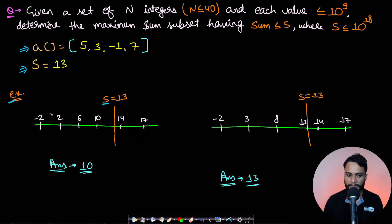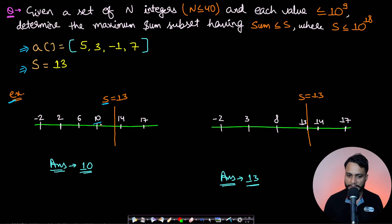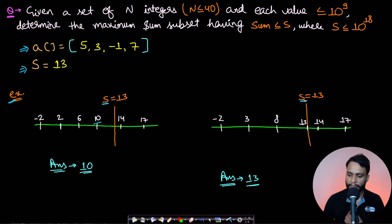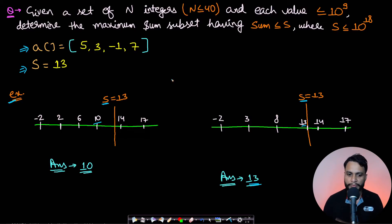Let's take an example. Let's say we have represented the sums on a number line and the sum value S equals 13. Which sum is closest to 13 but should not exceed 13? The answer would be 10 — 14 cannot be the answer because 14 is more than 13. In the second example the sum values of different subsets are given and the given sum value is 13, so the sum closest to 13 is 13 itself. 13 is not greater than S but is as close as possible, so 13 is the answer.